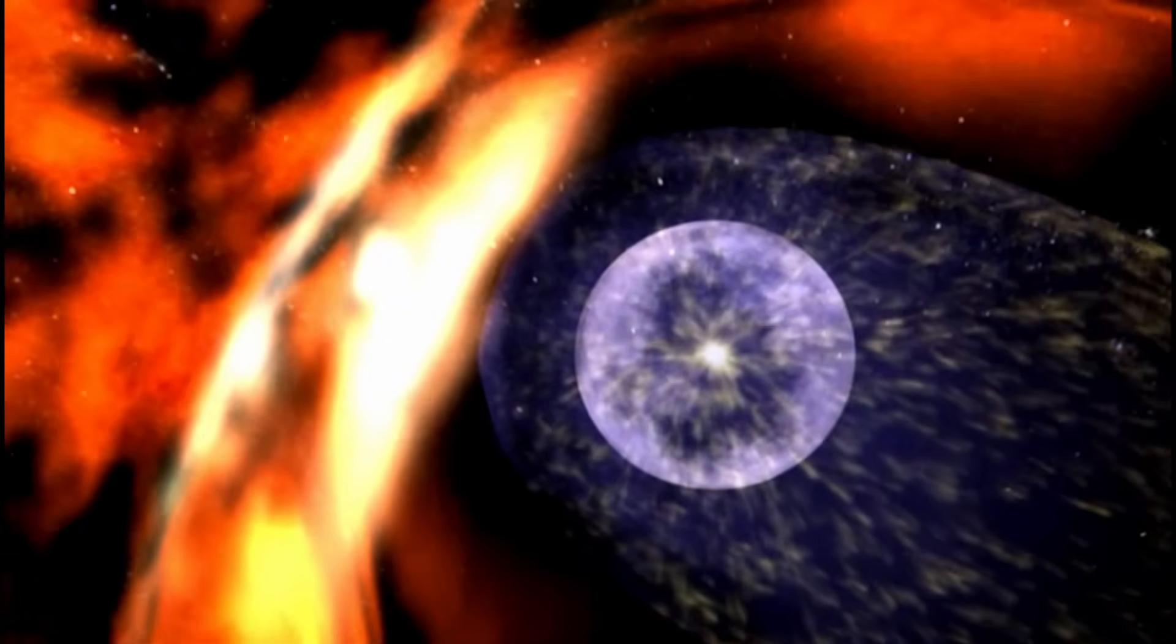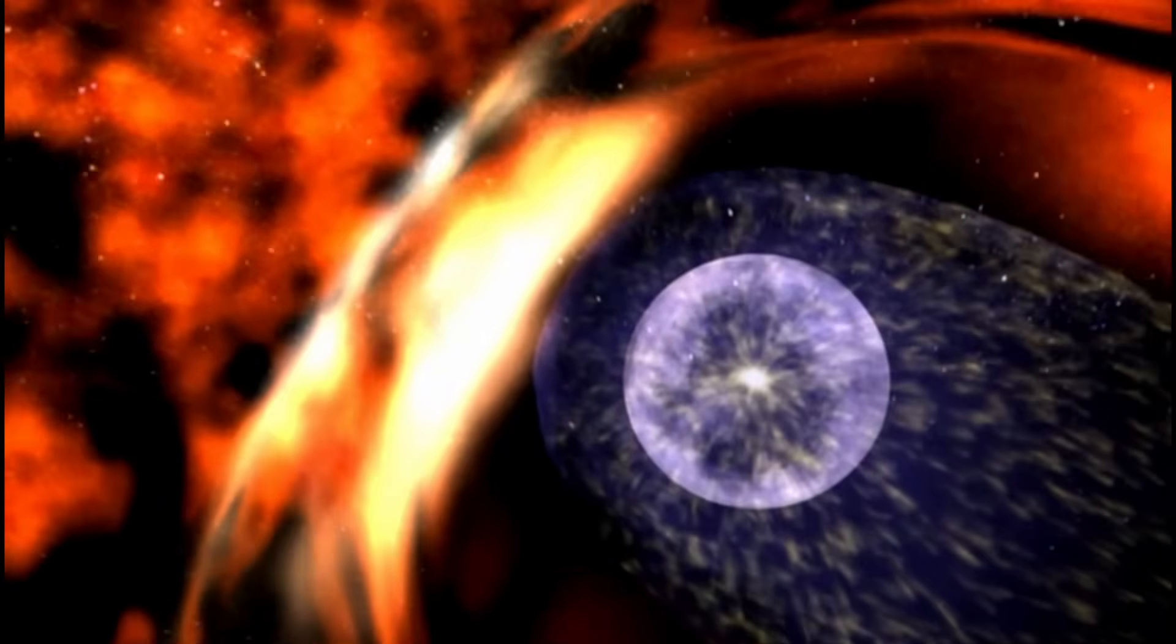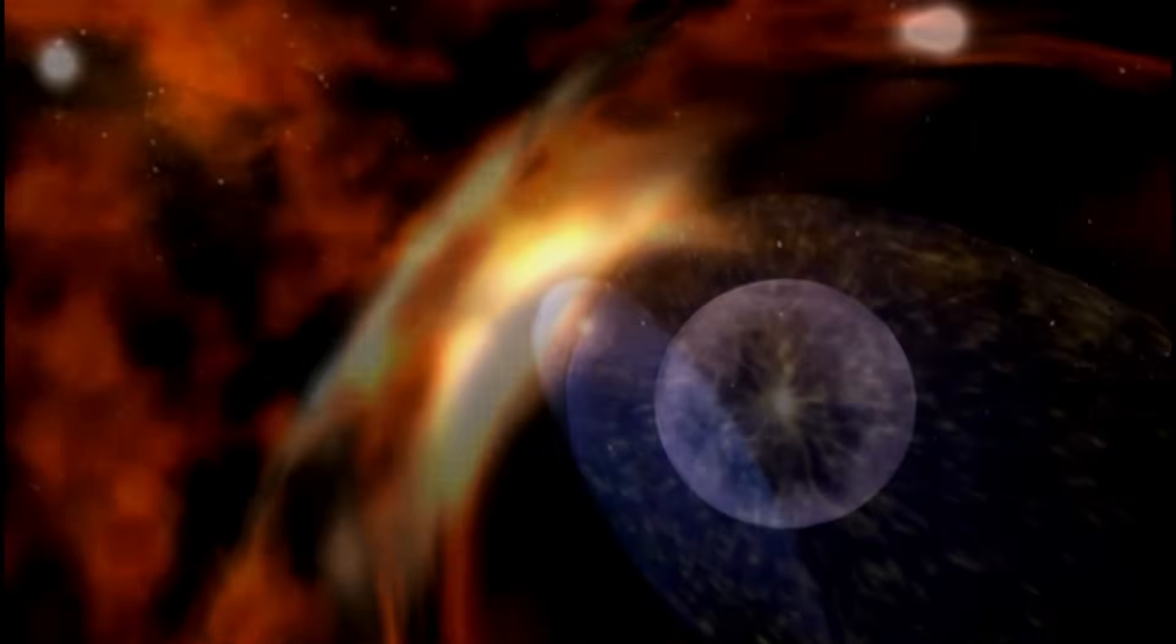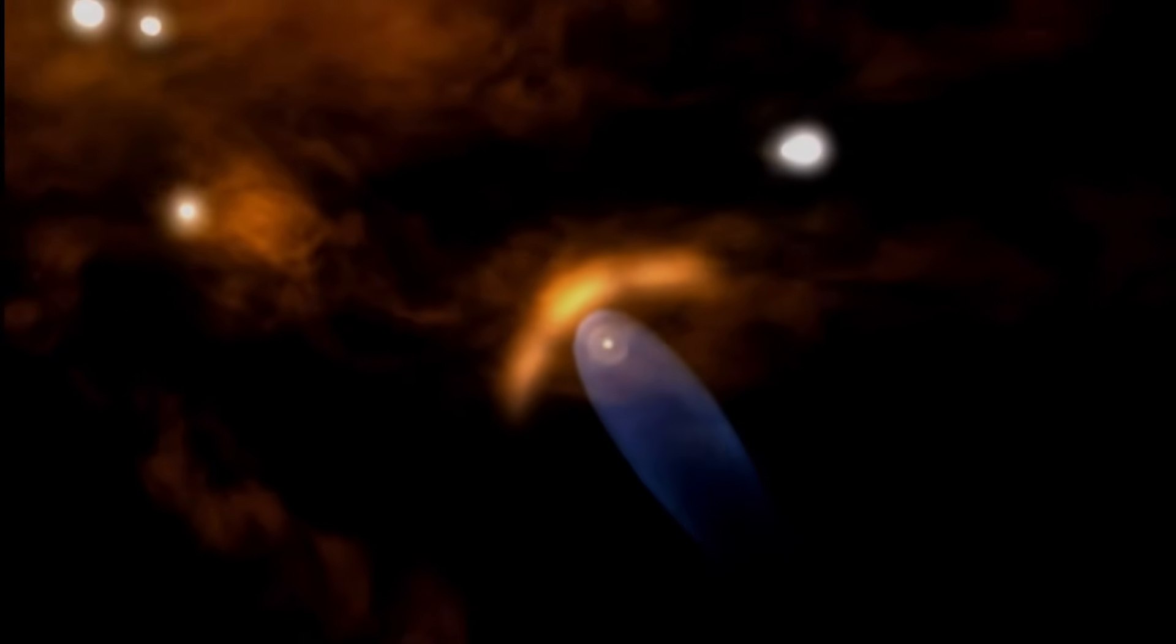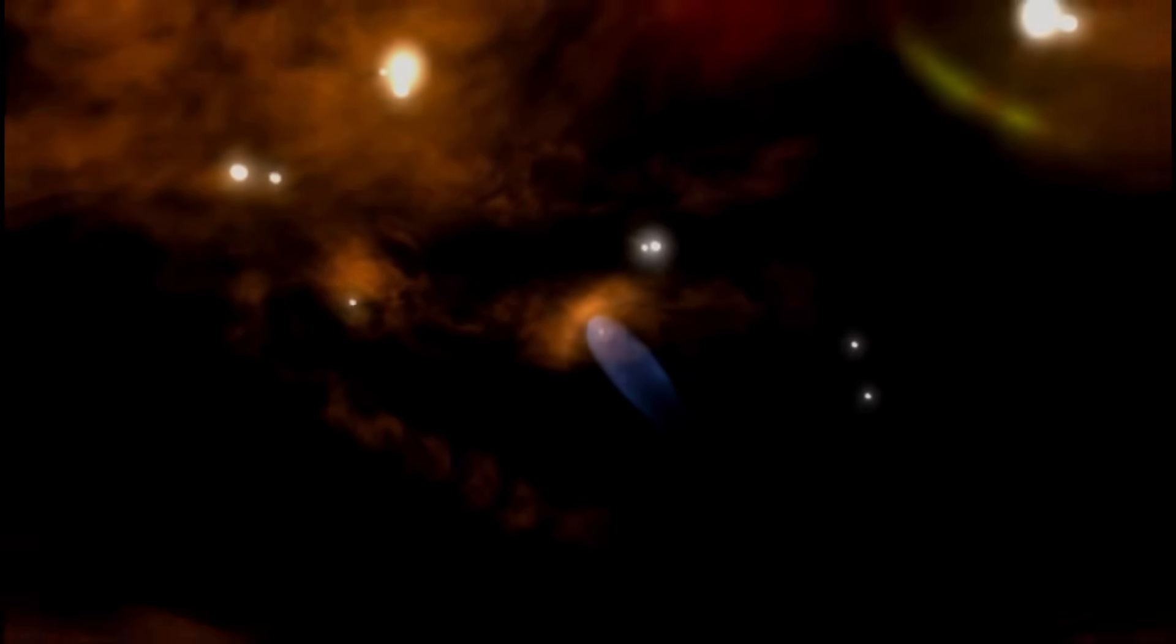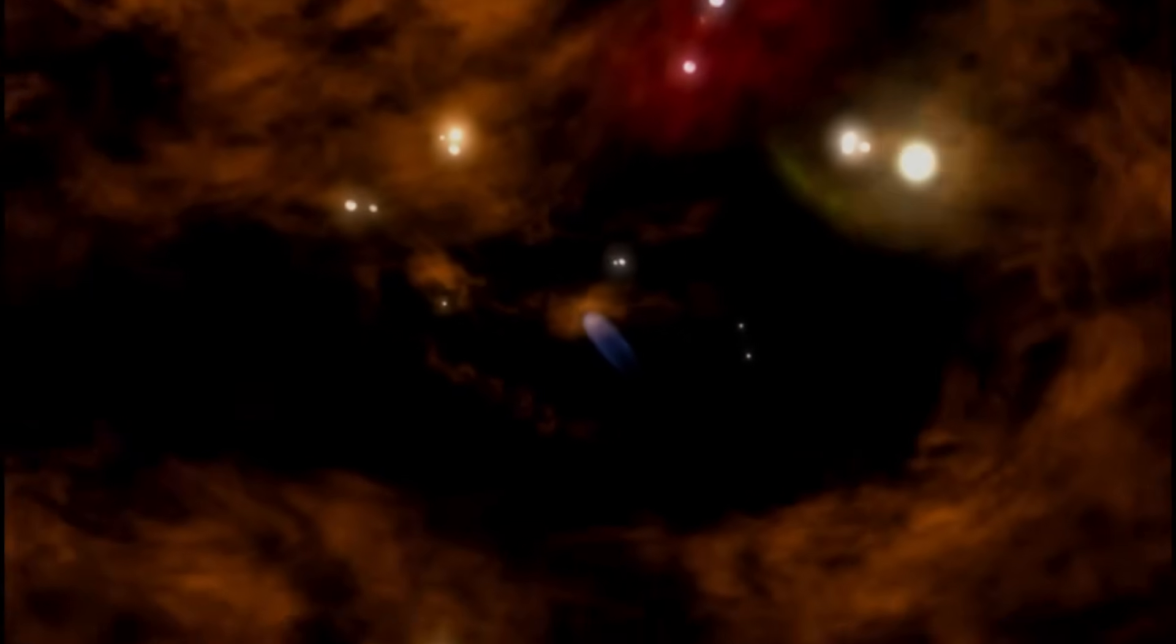The boundary where this bubble ends, and the interstellar medium begins, is called the heliopause. For decades, scientific models assumed this transition would be relatively calm and predictable, like a river calmly flowing into an ocean.